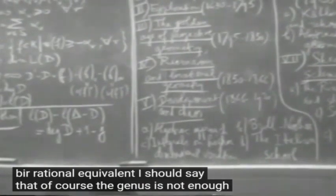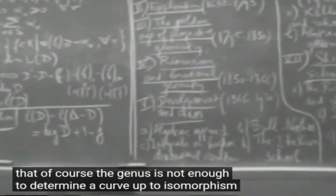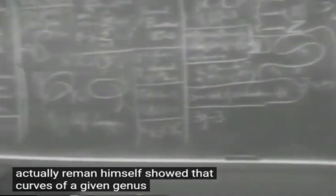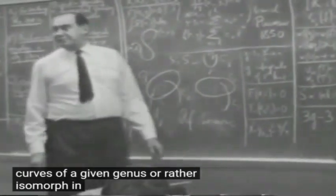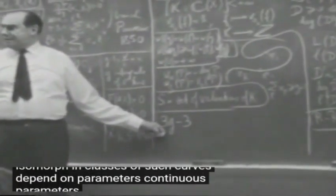I should say that of course the genus is not enough to determine the curve up to isomorphism. Actually, Riemann himself showed that curves of a given genus, or rather isomorphic classes of such curves, depend on parameters - continuous parameters which we call the moduli - 3g minus 3 of them.